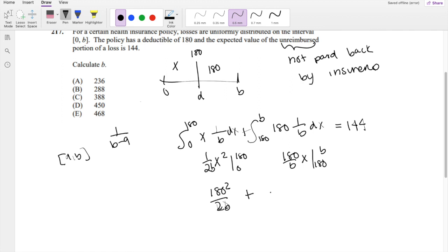plus 180, this would just be B minus 180 squared over B, and this is equal to 144.